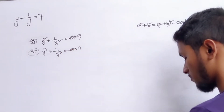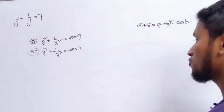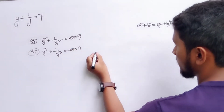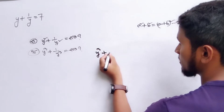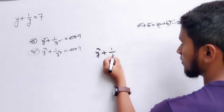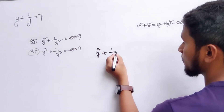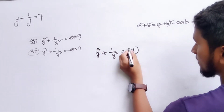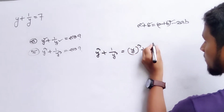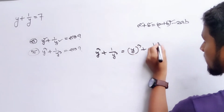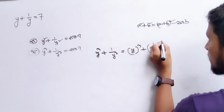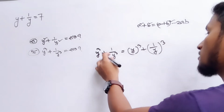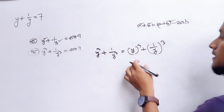Now, how do we get to follow? It's easy to write. y³ plus 1 by y³. So, y is equal to 2. y³ plus 1 by y is equal to 2. So, y³ plus 1 by y is equal to 2.